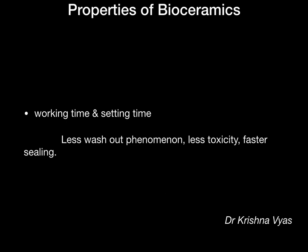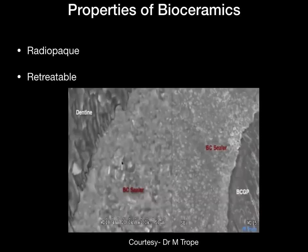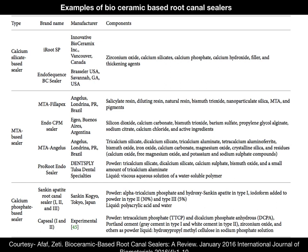Since these materials have a faster setting time, they show less washout phenomena, less toxicity, and faster sealing. They are also good radiopaque materials, with radiopacity above 8. One drawback is that they cannot be removed; however, this limitation is being overcome by using gutta percha as a core, which acts as a path or channel for re-treatment whenever the material needs to be removed.